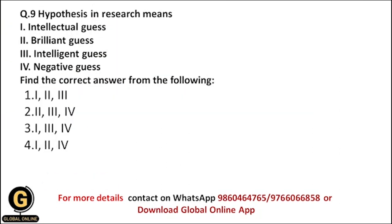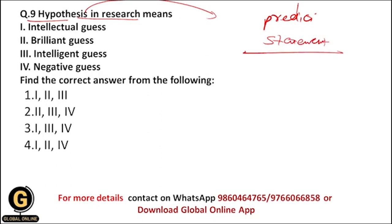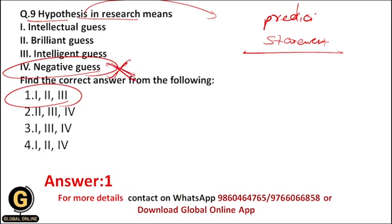Hypothesis in research means what? As discussed in the previous video, a hypothesis is basically a prediction of the results of your whole research process. A good hypothesis includes proper clarity about the variables under study and clearly defines the relationship between those variables. Hypothesis is an intellectual guess, a brilliant guess, and an intelligent guess. Therefore, the correct answer is option 1: one, two, and three. A hypothesis cannot be a negative guess, because if it were a negative guess, we could not test it.